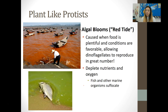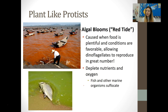An algal bloom is an explosion of protists. It's caused when food is plentiful and conditions are favorable — fertilizers can trigger this, causing plant-like protists to explode in number. When the algae dies, it depletes the nutrients and oxygen from the water, which kills and suffocates the fish and other marine life in that environment.